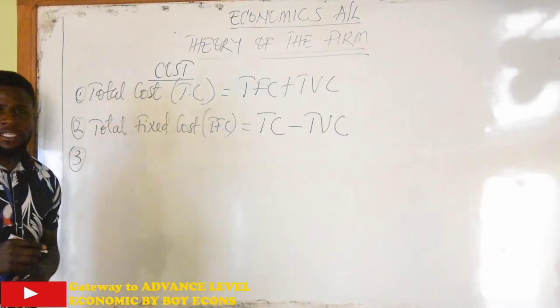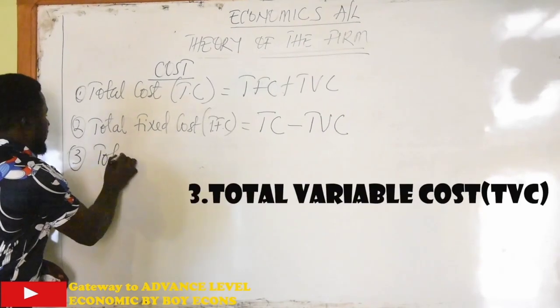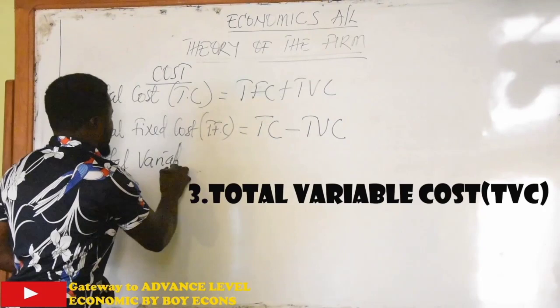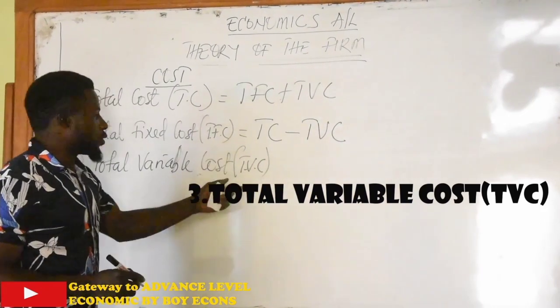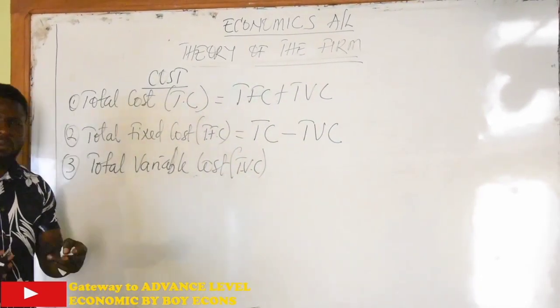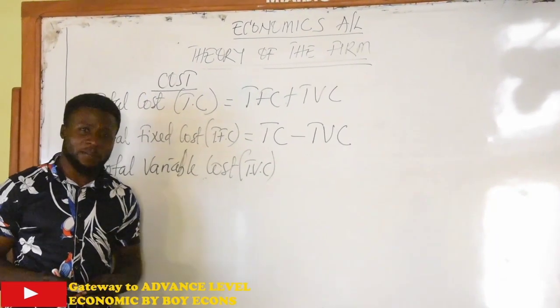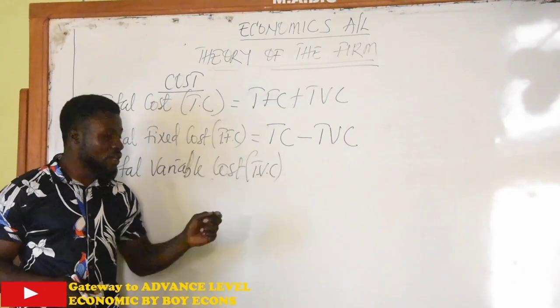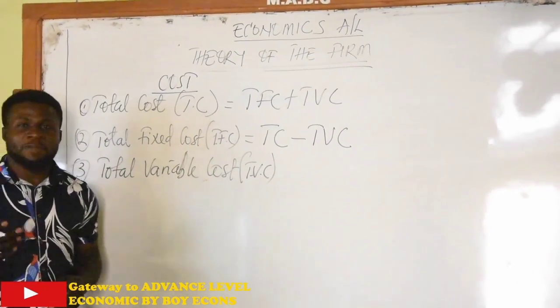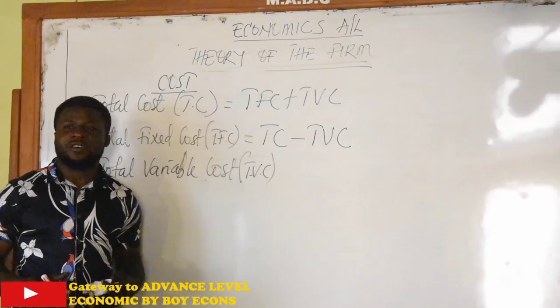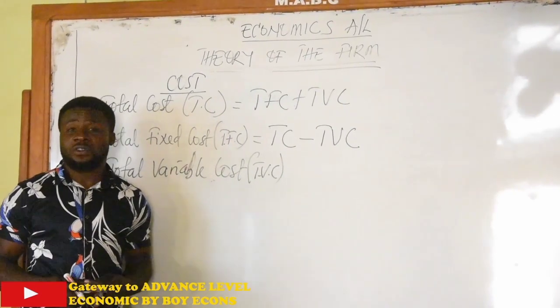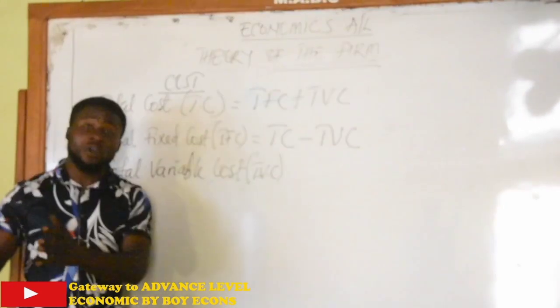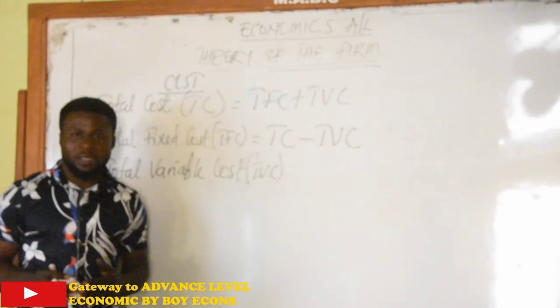And then we have the third, which is total variable cost. Total variable cost, just like it sounds, variable. When you say something varies, it means it changes over time. Total variable cost, which is also called operating cost or running cost, simply refers to the expenses that a businessman or an entrepreneur makes in order to gather varying factors of production on a day to day basis. Those factors of production that change as output is changing. Those factors of production that if you need to produce more, you need to hire more of them or you need to purchase more of them or spend more on them.